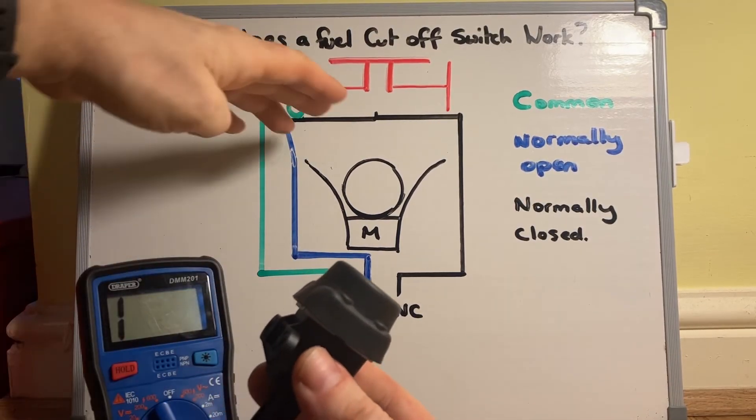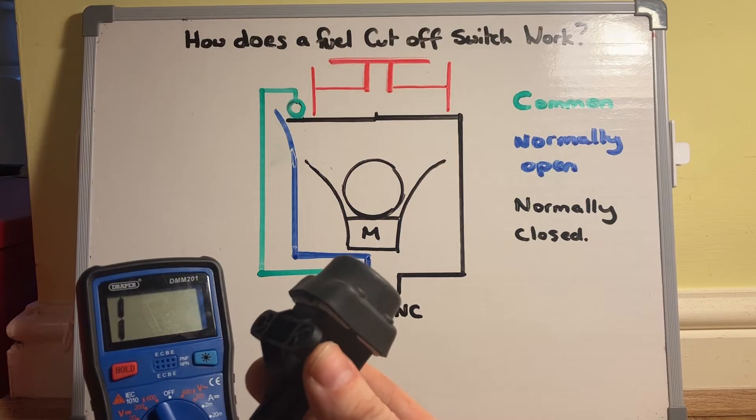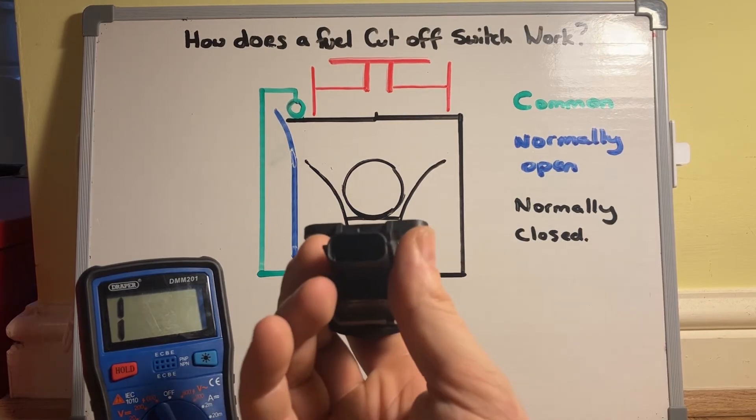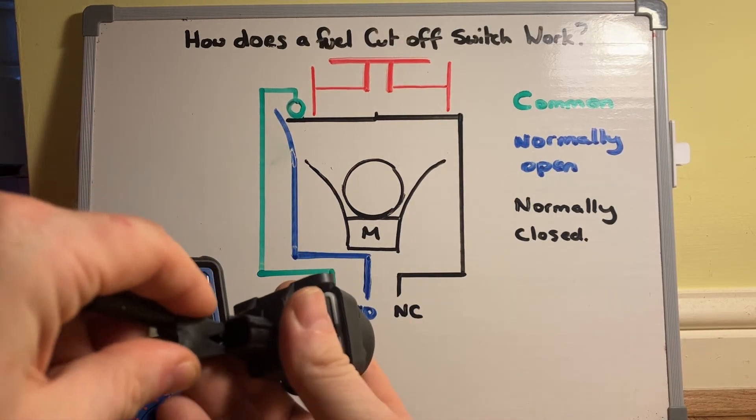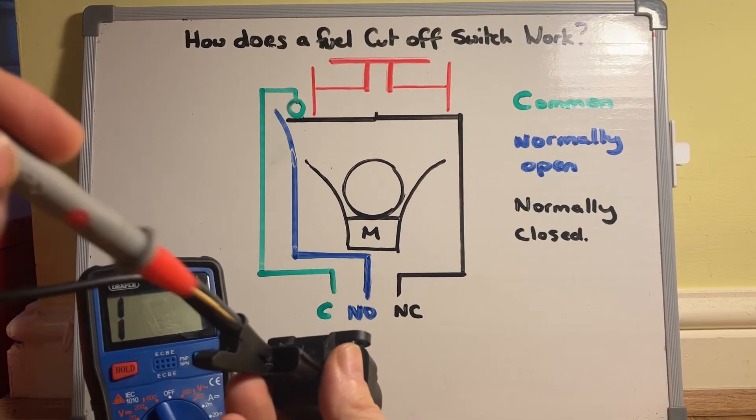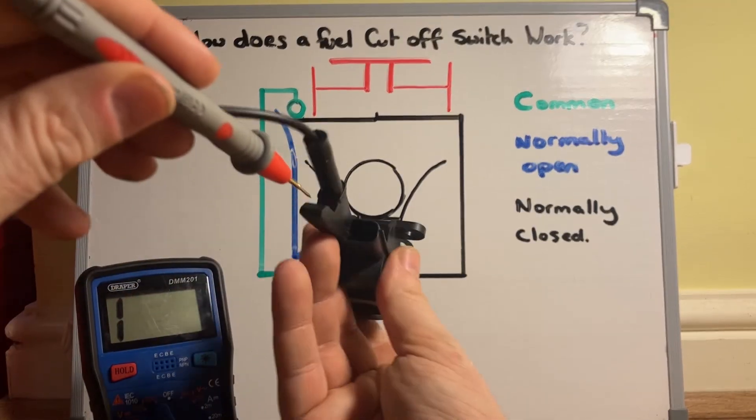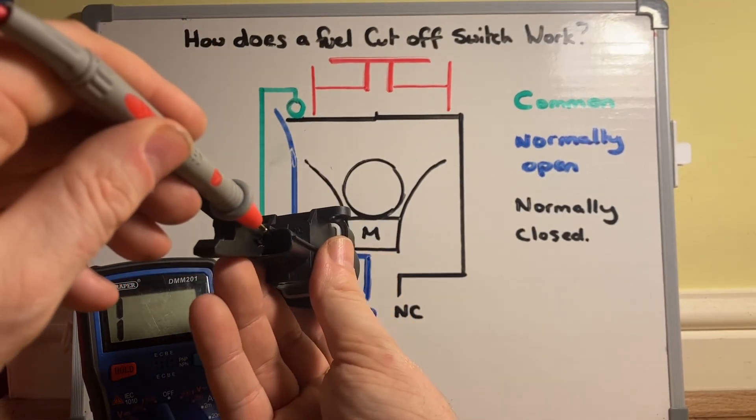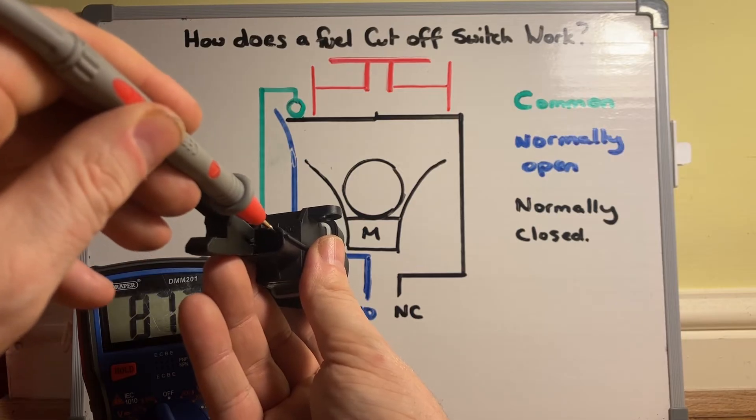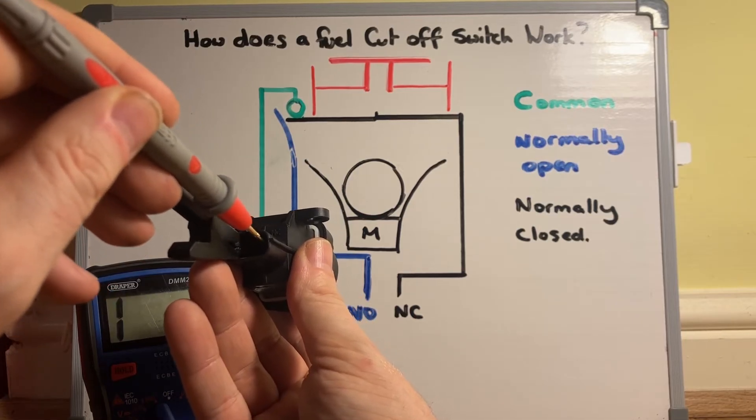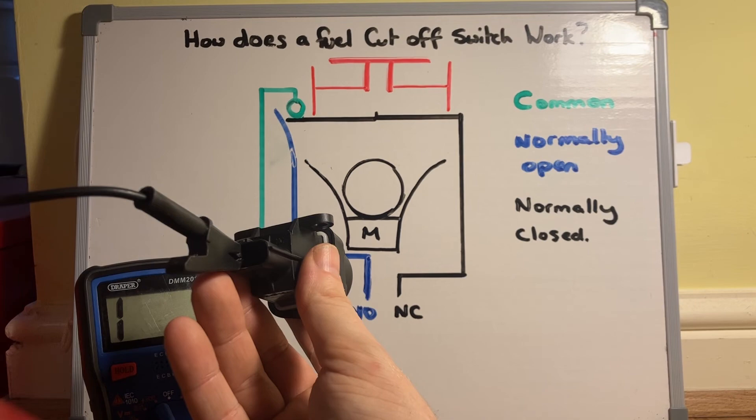If I shake it, that will break these two contacts, they'll push up. So now what I should find is that the normally open circuit is now complete and the normally closed one is not. So now I'm going to the middle contact here, hopefully you can see it. That one's now complete. If I go back to the normally closed, nothing. So that is open circuit now. In that condition the fuel pump would not be working.